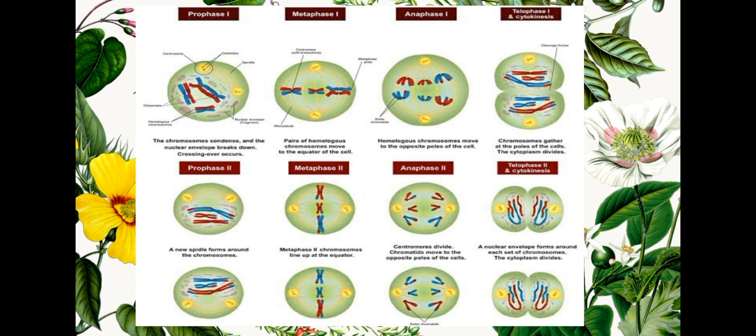The last part of Meiosis 2 is telophase 2, where the cell divides, new cell walls are formed, and there are four haploid cells called a tetrad. See you in the next video. Have a great day.